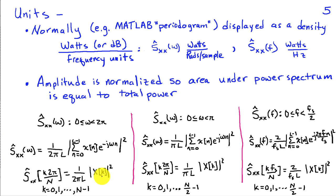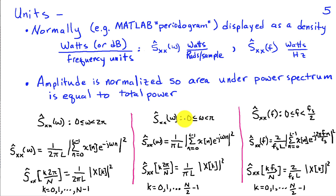Converting these in terms of DFT coefficients x of k: when interested in S_xx of omega between 0 and 2 pi, we have the magnitude squared of the length N DFT x of k normalized by 2 pi L, where N is the DFT length and can be greater than L if we do zero padding. If we're only representing the power spectrum between 0 and pi, we take the length N DFT coefficients magnitude squared and divide by L times pi, displaying k from 0 to N over 2 minus 1, assuming N is even.